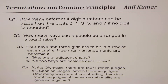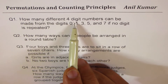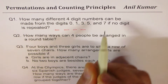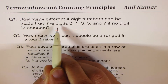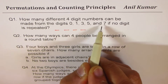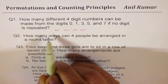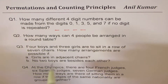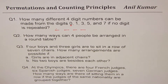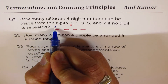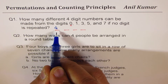Now let's answer them one by one. The very first one is how many different four-digit numbers can be made from the digits 0, 1, 3, 5, and 7 if no digit is repeated. When you're making four-digit numbers, you cannot place zero in the first place. So how many options are there? You can only place one of these four non-zero digits, so there are four ways in which the first position can be filled.